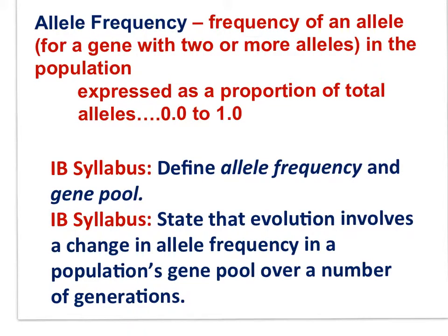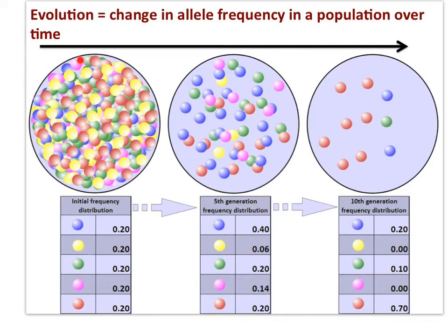Here are the two IB syllabus statements of relevance: define allele frequency and gene pool, and state that evolution involves a change in allele frequency in a population's gene pool over a number of generations. In this diagram, you can see all the alleles for a certain gene for all the individuals in a population. This represents the gene pool, and you can see that all the alleles are equally represented. Over time, by the fifth generation, you can see that the allele frequencies have changed. By the tenth generation, some alleles are no longer present — this is evolution.